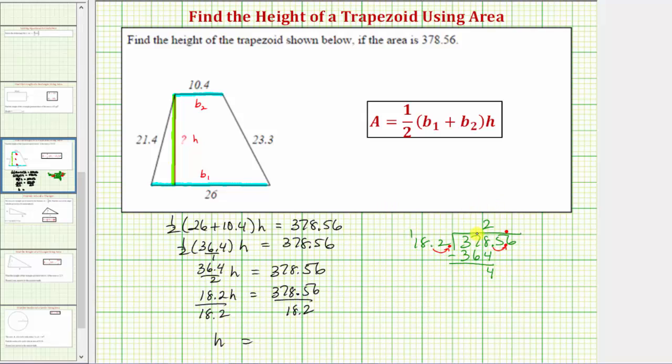Subtracting, eight minus four is four, seven minus six is one. Bring down the next digit, which is five. Since 145 is less than 182, there are zero 182s in 145. Zero times 182 is zero. Subtracting, the difference is 145. Bring down the last digit.